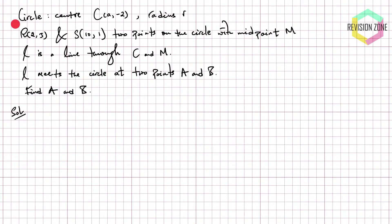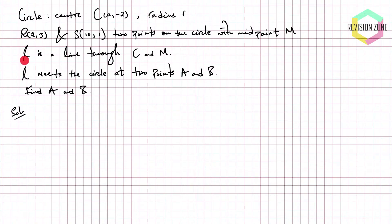In this question, we're given a circle. The circle has centre at (a, -2), and its radius is r, so we don't entirely know the centre fully, and we certainly don't know the radius. We're told that two points R and S lie on the circle, and that the midpoint of these two points is M, and that there's a line which passes through the centre of the circle and the point M, such that the line itself intersects the circle at two points A and B. Our task is to actually find the points A and B.